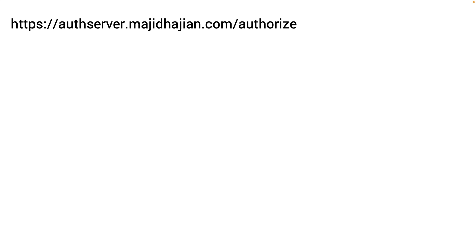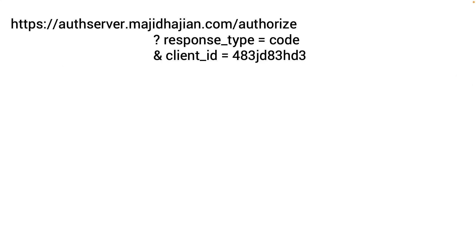Let's take a look at a real example. Imagine we have an authorization server under our domain. The authorize endpoint has different parameters. The most important required ones: response_type=code indicates the authorization code grant flow. Then we have client_id — you can ask any authorization server admin for this. In the case of Auth0, you can get it from the dashboard.